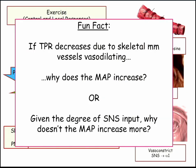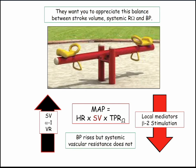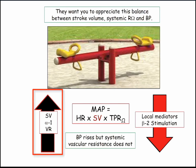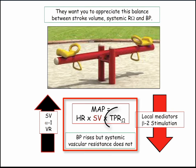Resistance decreases due to skeletal muscle dilating — so why does our blood pressure actually go up during exercise? It's really just a balance. Increased stroke volume keeps up cardiac output, along with venoconstriction and alpha-1 activity. Although pressure goes up, it's the change in peripheral resistance at the skeletal muscle going down that keeps blood pressure from going off the wall while we're exercising.